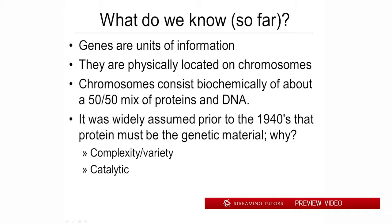What was known in about 1925, given Mendel and Sutton and some of the early fly work? One thing Mendel said was that genes are units of information. We further know that they are physically located on chromosomes. Those are the two major ideas — Mendel and chromosomes fusing together conceptually — allowing us to make maps of genes and understand what those maps really mean.